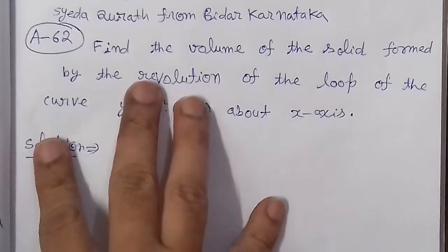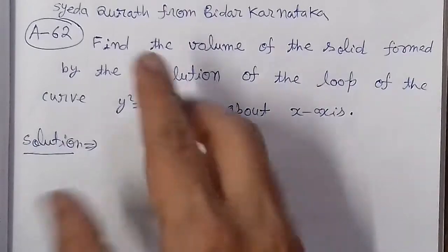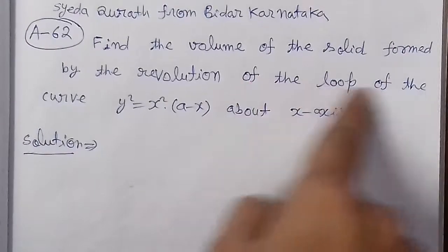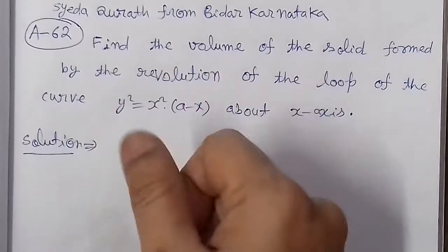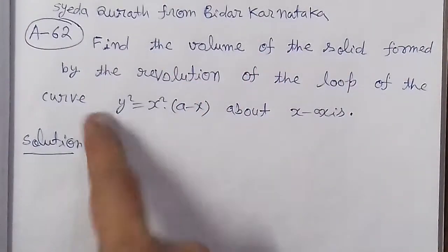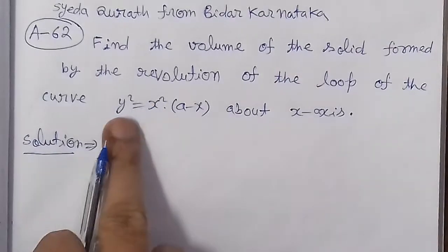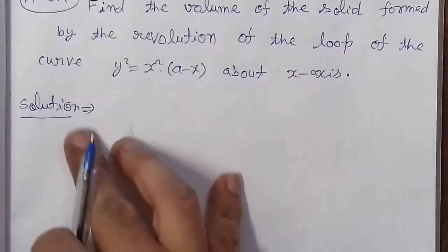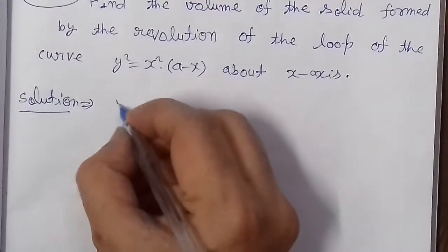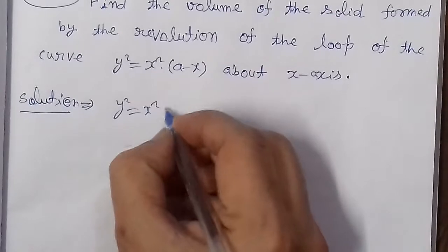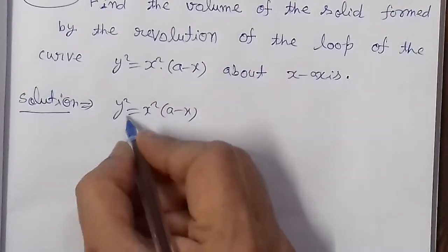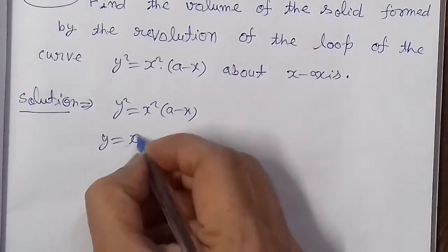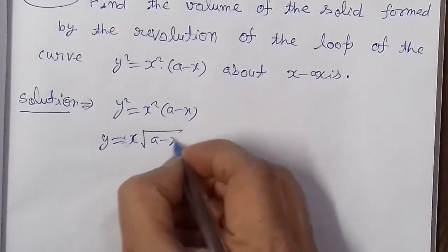First of all, because the curve has a loop, we need to find the limits of the loop and revolve the solid. Now, there is no negative value; here we will find y. Y is equal to square root of x, and this value is plus or minus square root of (A - x).